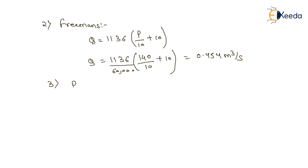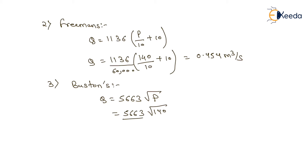The third one will be the Buston's formula. According to Buston's formula, Q equals 5663 root P. The value of P is 140, and we want the answer in meter cube per second, so we divide by 60,000. We get the answer as 1.116 meter cube per second as the amount of water per Buston's formula.